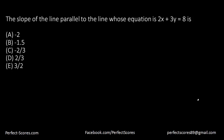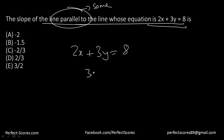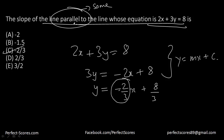The last question asks for the slope of the line parallel to the given line. Parallel lines have the same slope. For 2x plus 3y equals 8: 3y equals negative 2x plus 8, so y equals negative 2/3 x plus 8/3. The slope is negative 2 over 3.